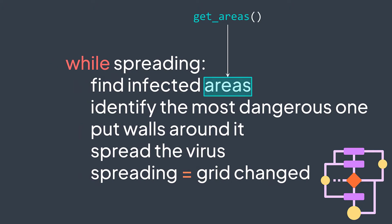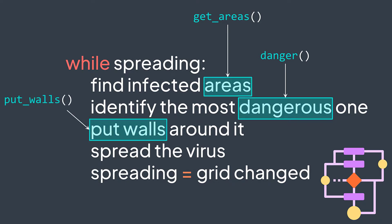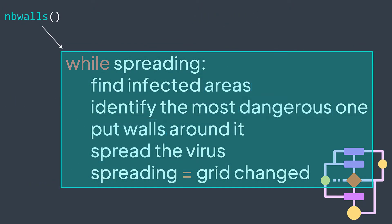We first need a function get_areas to extract the infected areas. We also need to identify the most dangerous one, so we need a function danger that calculates the danger of an area, then take the maximum area by danger. Then we need a function put_walls to put walls around an area, a function spread to spread the virus — which should also return whether the grid changed. Finally, we need a function nb_walls that contains the main loop and returns our final output.